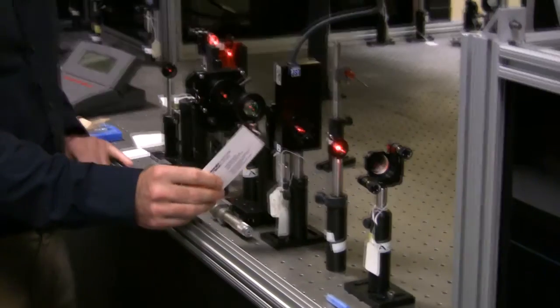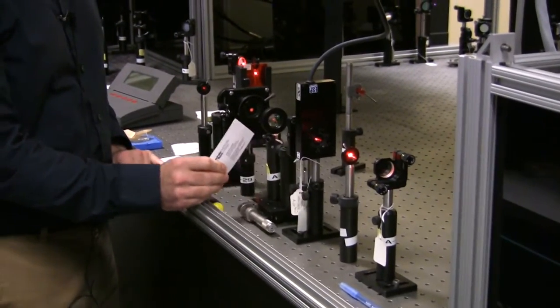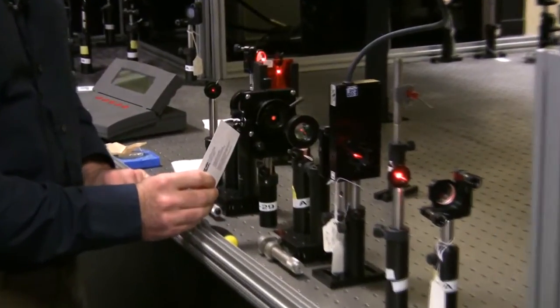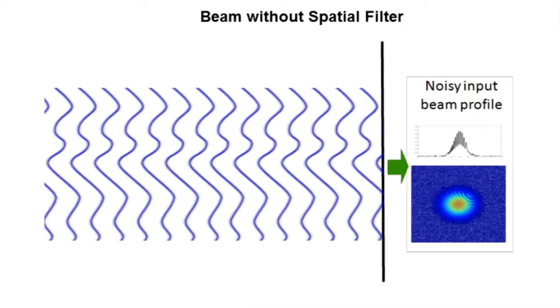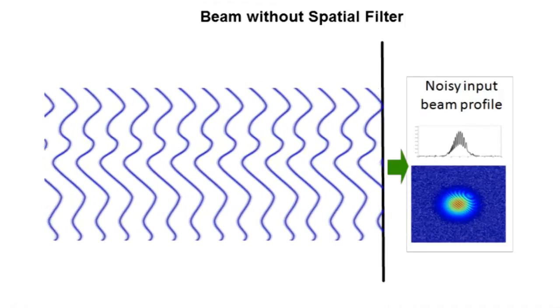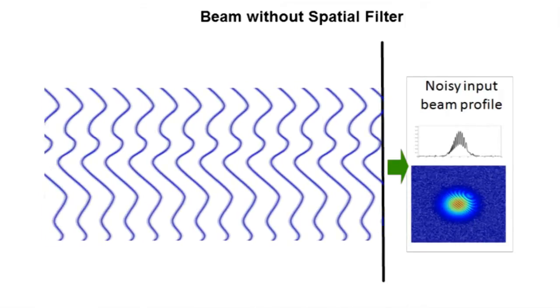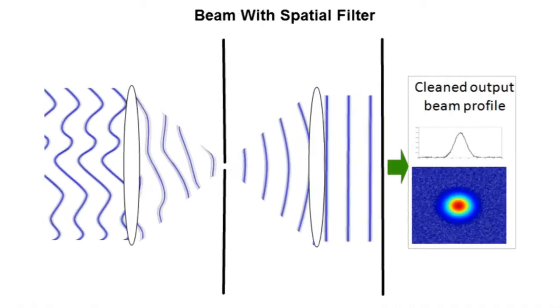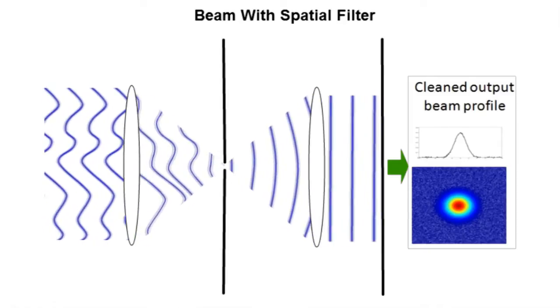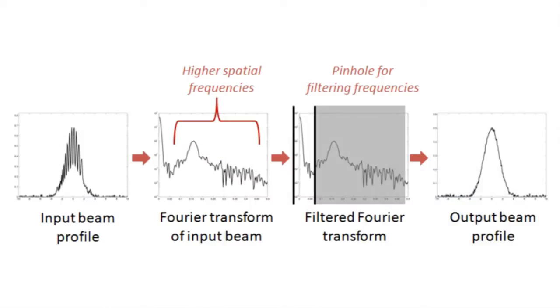After we pass through the attenuator, we go into what's called a spatial filter. And the spatial filter allows us to clean up the beam that comes out of the parametric amplifier, which is typically not of a good quality. And we need a very high quality beam in order to do z-scan. So what the spatial filter does is it simply focuses down the beam to a pinhole. And that pinhole allows you to cut out the higher spatial frequencies of the beam. So the beam that actually comes out doesn't have these higher spatial frequencies, which leads to kind of a poor beam quality.